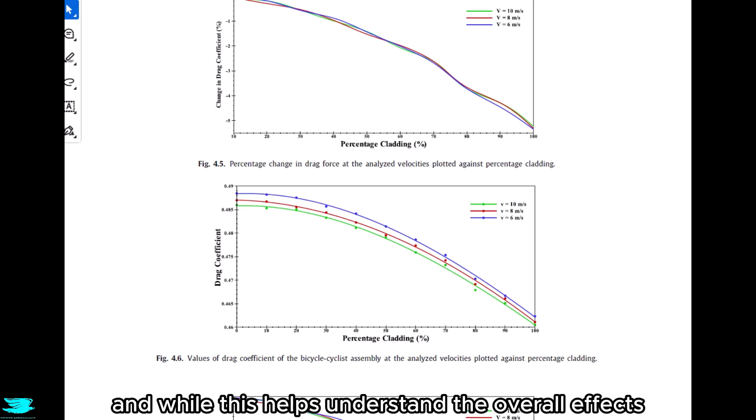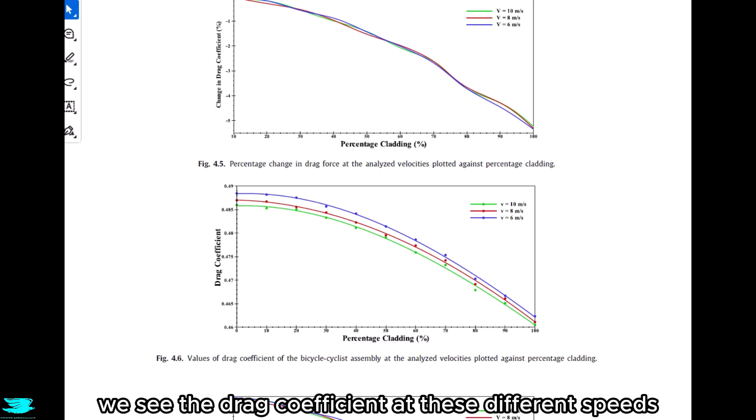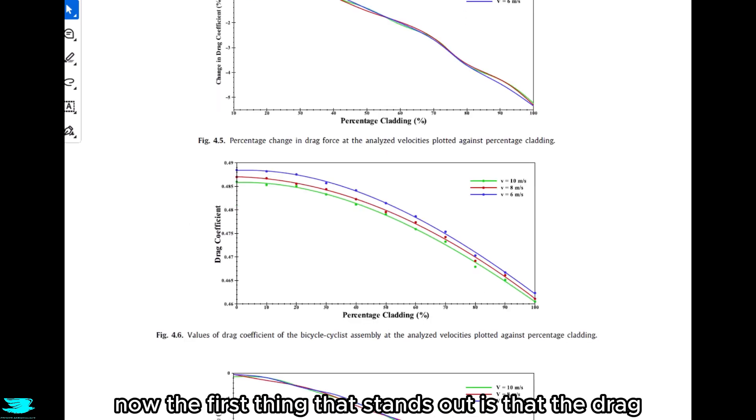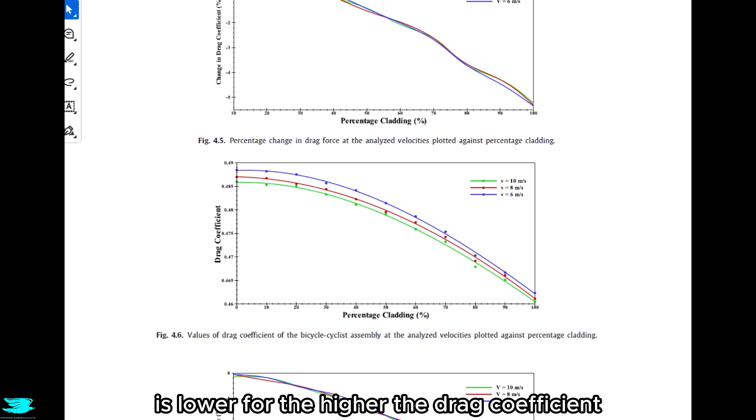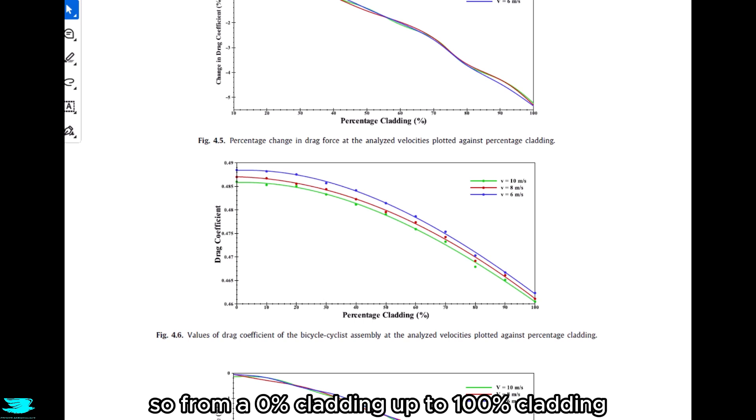But this is for the drag force. While this helps understand the overall effects in a real world situation, it doesn't tell us what is happening to the actual efficiency of the design and the drag coefficient. In figure 4.6, we see the drag coefficient at these different speeds now. The first thing that stands out is that the drag coefficient is lower the higher the speed is. We can see that at about 10 meters per second with no cladding, the drag coefficient is about 1% lower than at 6 meters per second, so the green line compared to the blue line. That's not a lot, and by itself that could be within the error of the simulation. But given that this general trend holds across so many different simulations, from 0% cladding up to 100% cladding, it seems like it's probably true. So we can probably conclude that going faster, while that does increase the overall drag, it still drops the drag coefficient and so the efficiency increases too.